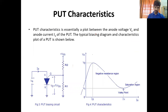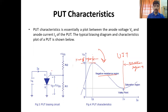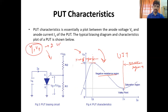आगे है इसकी characteristics। It is similar like UJT — इसमें भी तीन region आएंगे। पहले cut-off region होगा — जब peak point (VP) से नीचे voltage आएगी, उस time पर यह cut-off region में होगा। जब VP पर एक बार पहुंच गई, उसके बाद यह negative resistance region में चला जाएगा। फिर valley point के बाद यह saturation region में चला जाएगा। Intrinsic stand-off ratio और VP को हम accordingly program कर सकते हैं with the help of two external resistors।